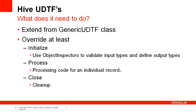Hive UDTFs extend from the generic UDTF class and need to override certain meaningful methods. The initialize method must be overwritten to validate the input and output types for the function. Hive does this via objects of type object inspector. The process method must be overwritten — this is the method which actually operates on a given row. Finally, the close method should be overwritten to perform any necessary cleanup.